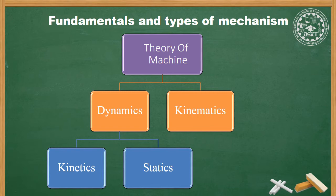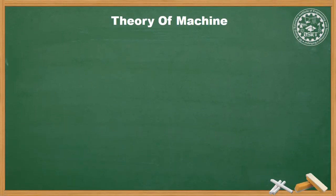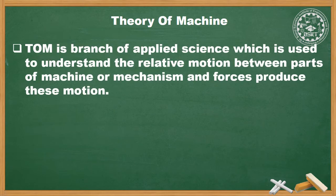The study of relative motion, but without consideration of forces, is called Kinematics. And the study of relative motion between the various parts with consideration of forces is called Dynamics. Theory of Machine is the branch of applied science which is used to understand the relative motion between the parts of a machine or mechanism and forces that produce this motion.